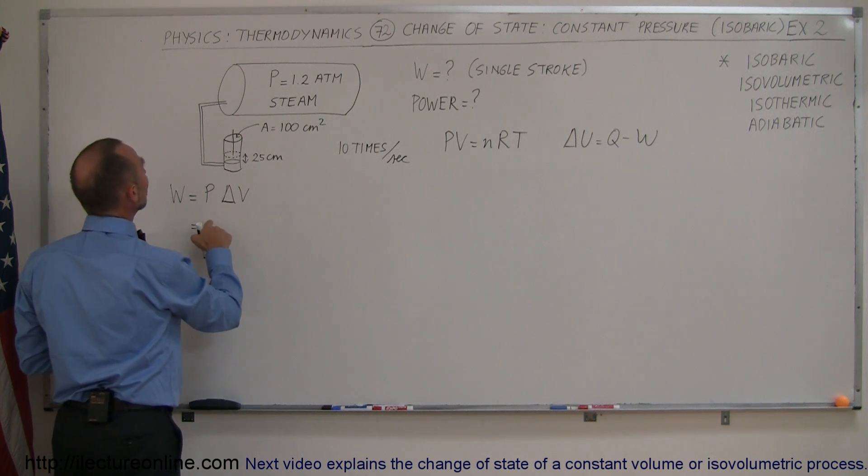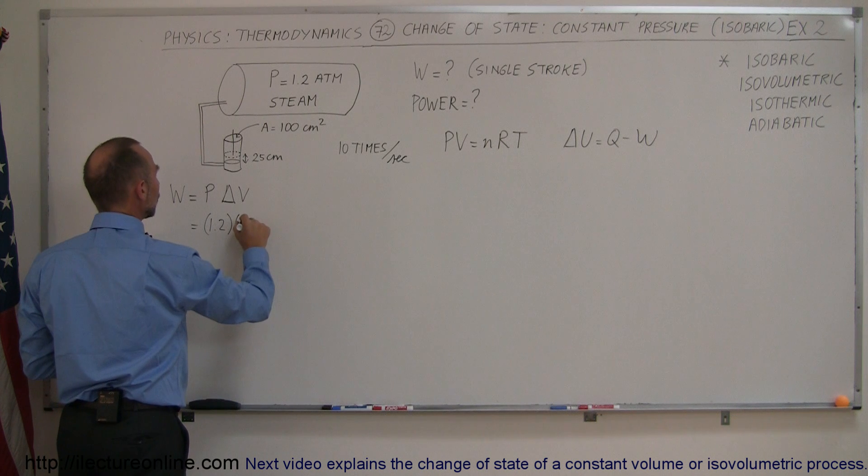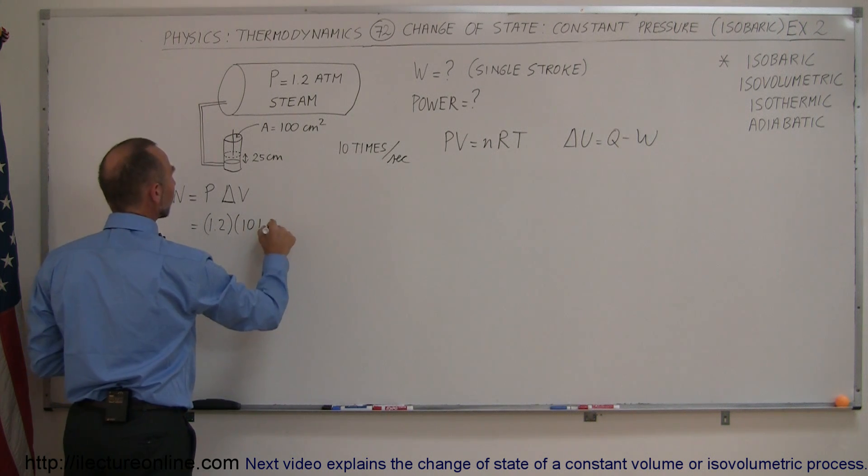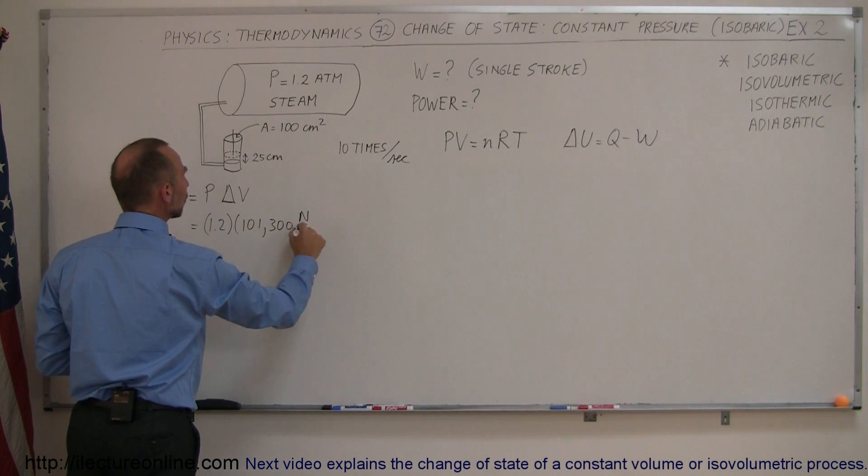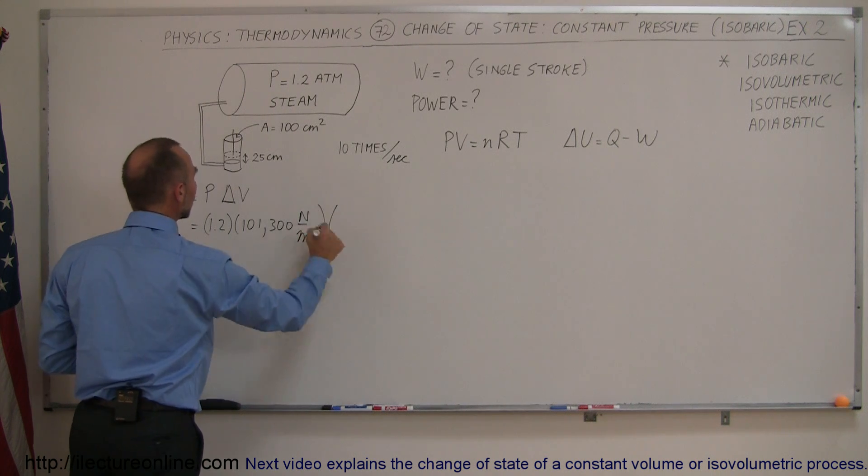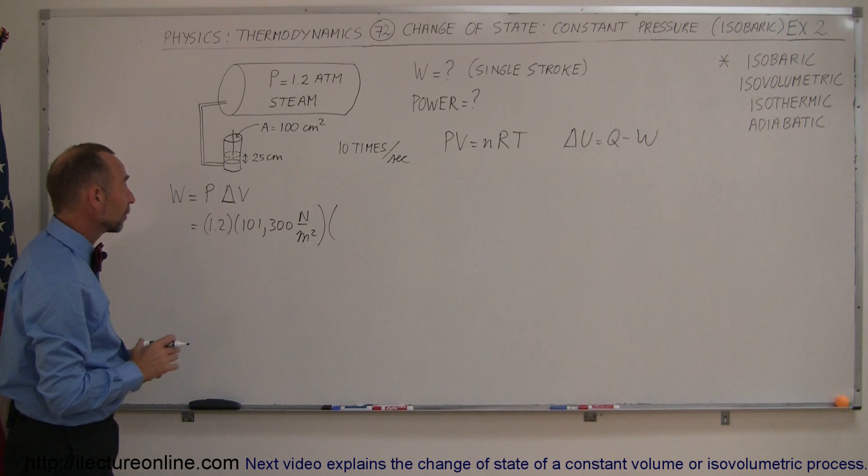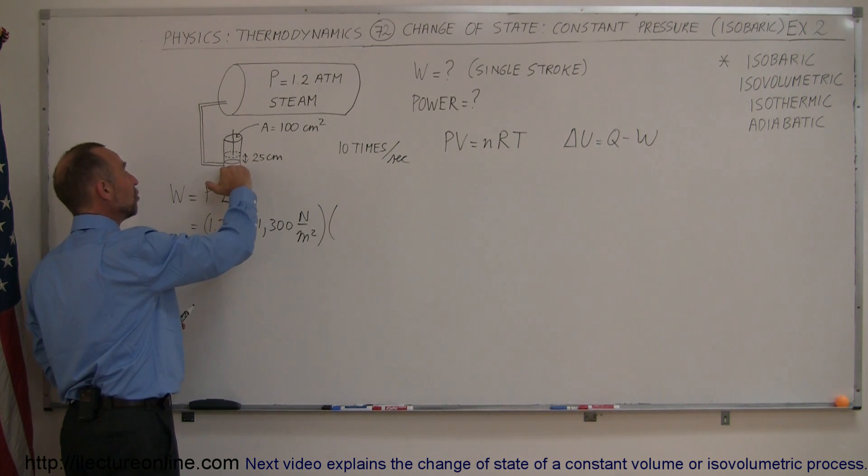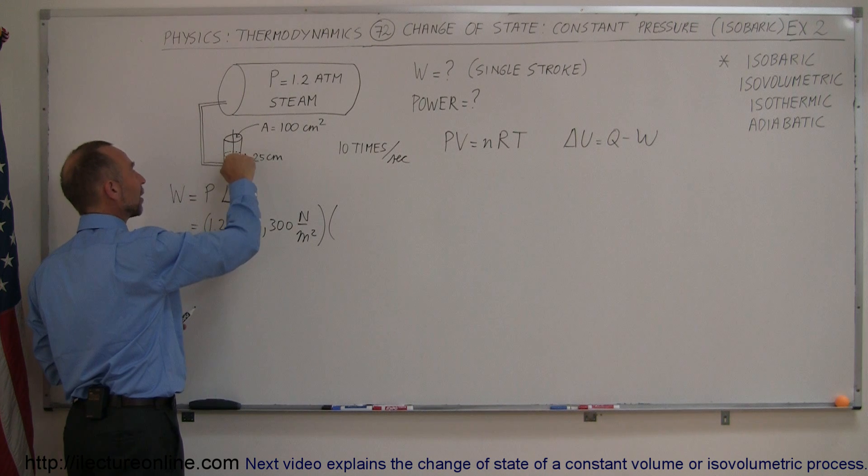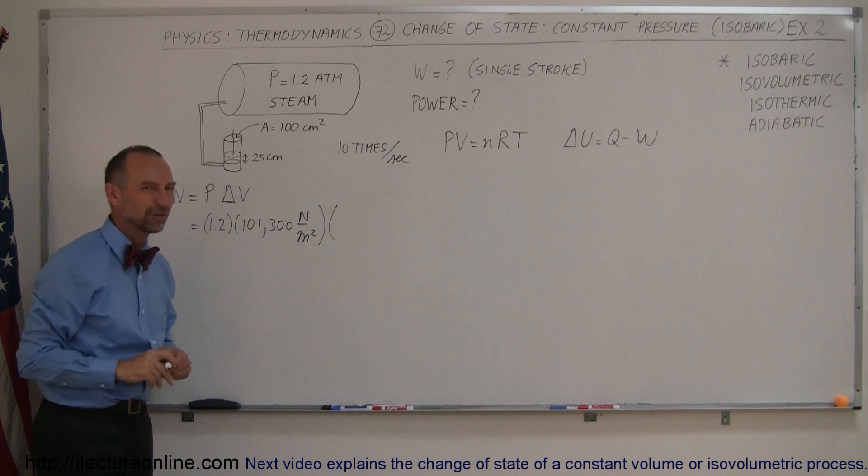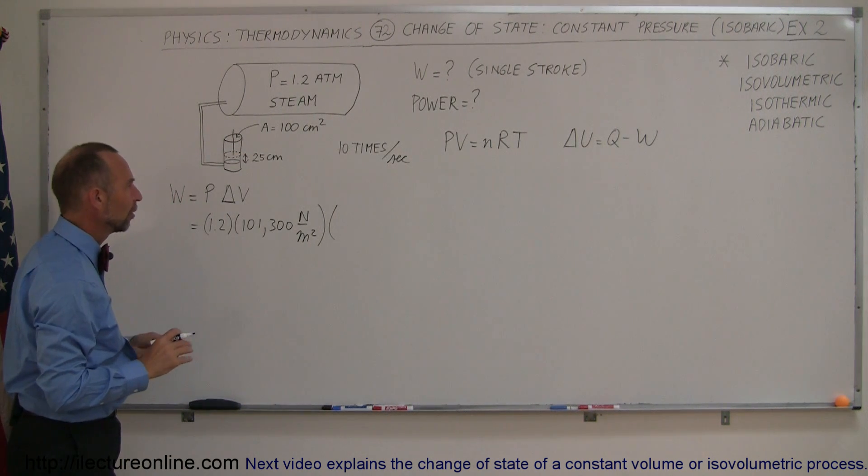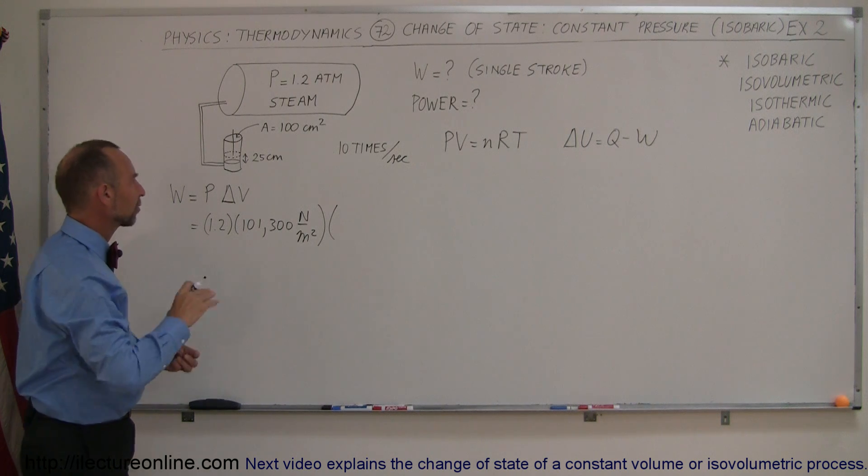All right, the pressure is, of course, equal to 1.2 atmospheres converted to pascals, which is 101,300 pascals, which is newtons per square meter. And then we multiply that times the volume, or I should say the change in the volume. So, how much does the volume change when the piston gets pushed up? About 25 centimeters, when the cross-sectional area is 100 square centimeters. Of course, we have to convert that to square meters. So, it would be height times cross-sectional area.